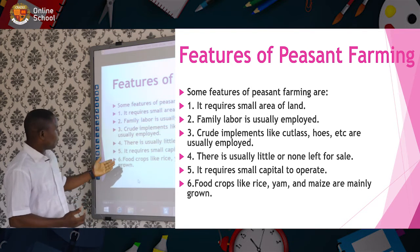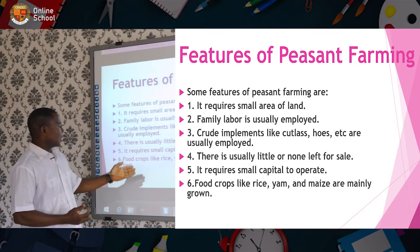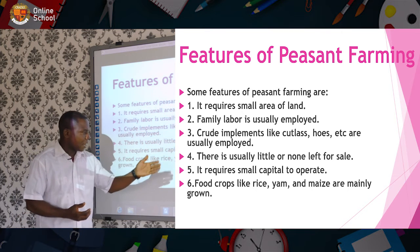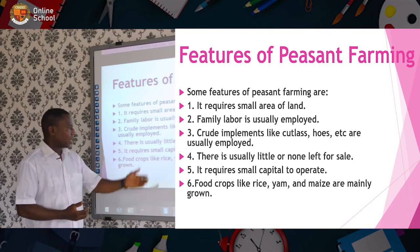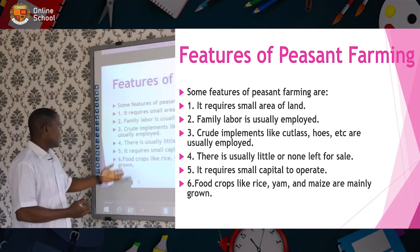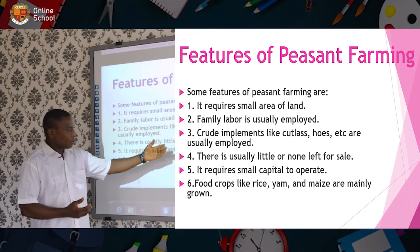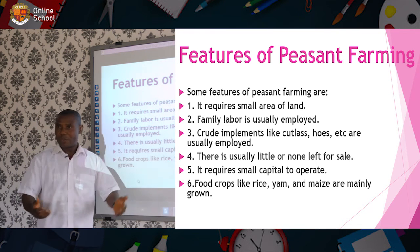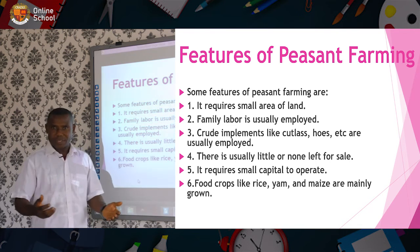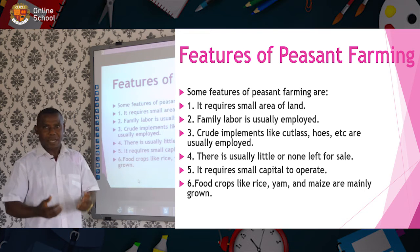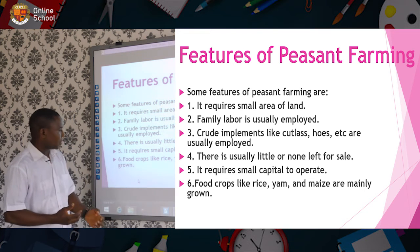Number six, food crops like rice, yams, and maize are mainly grown. These are the types of crops that we see always around us, and they are produced by peasant farmers.